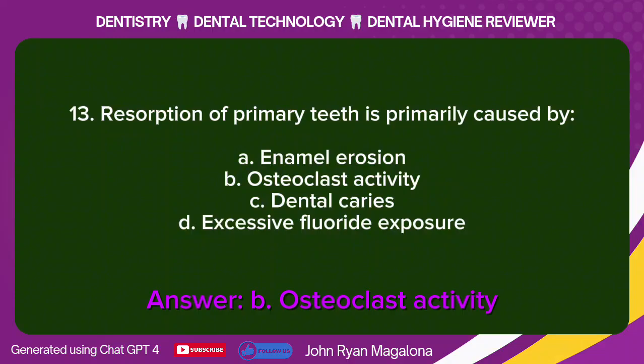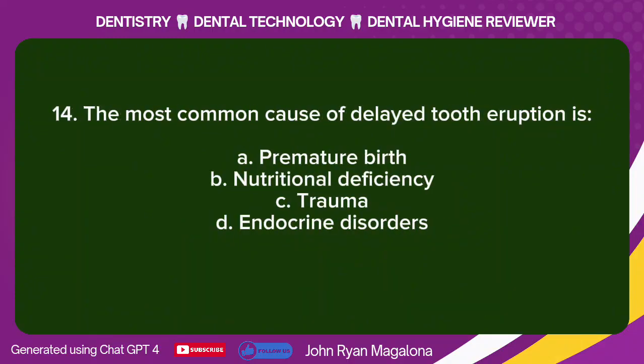Answer: B. Osteoclast activity. Question 14: The most common cause of delayed tooth eruption is: A. Premature birth. B. Nutritional deficiency. C. Trauma. D. Endocrine disorders. Answer: D. Endocrine disorders.